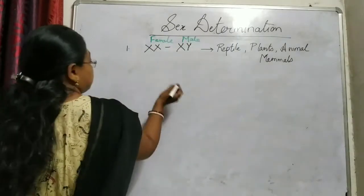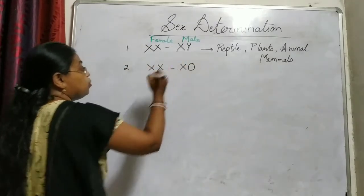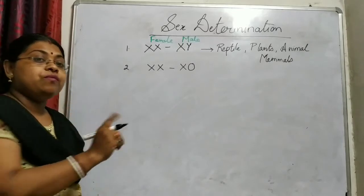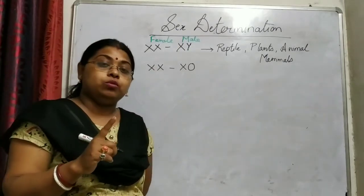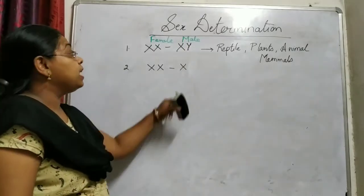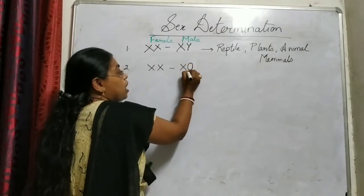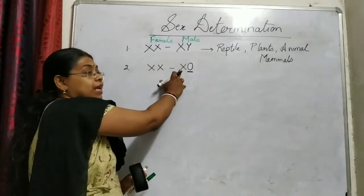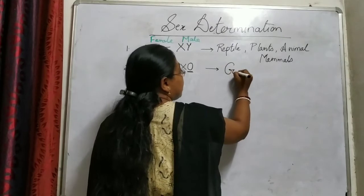The second variety of sex determination is the XX and X0 system. XX means two X chromosomes, which determines female, whereas the male is determined by a single X chromosome. If a single X chromosome is present and no other sex chromosome is present, then it is known as male, represented by X0, where 0 means nothing. So female has 2 X chromosomes and male has only 1 X chromosome. This type of system is found in grasshoppers.